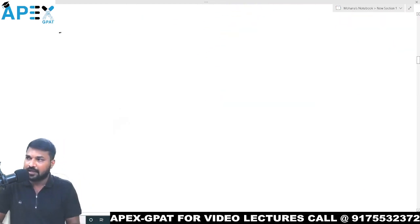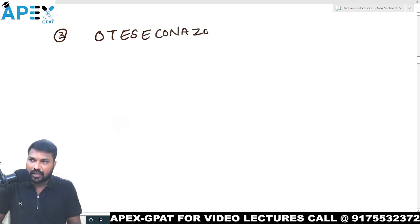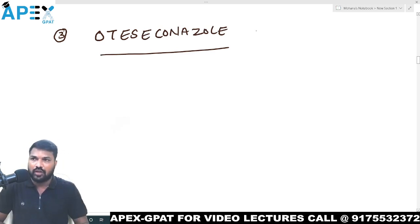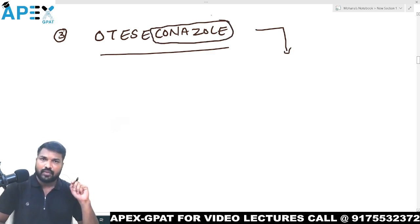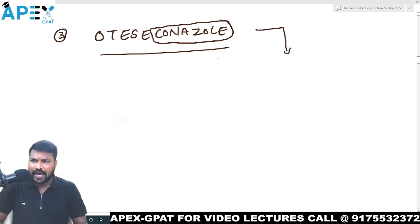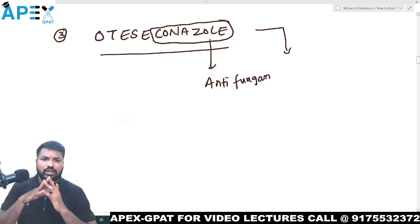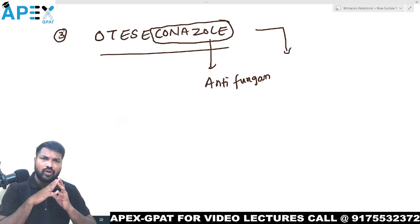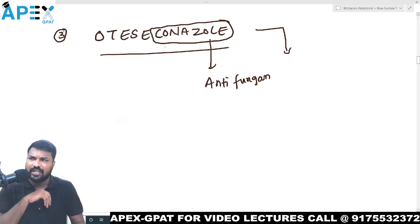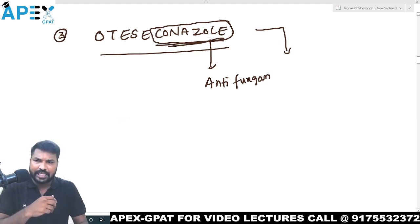The third drug is Oteseconazole. Look at the last part — conazole. Conazoles are antifungal drugs. You remember fluconazole, tetraconazole, ketoconazole, voriconazole — all these azoles end with conazole. Conazole means antifungals.